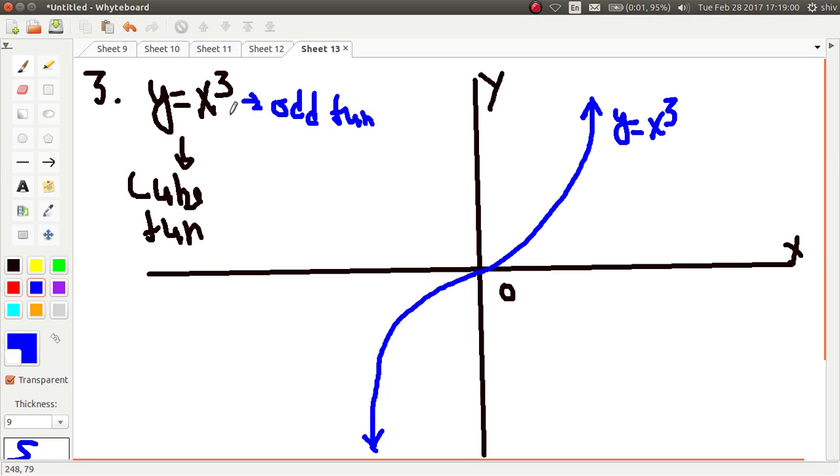That's why the graph of this function is symmetrical about the origin. Since we can see that the graph in positive direction is similar but opposite in the negative direction of the x-axis, below the x-axis. So let's discuss the domain and range of this graph.